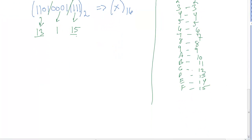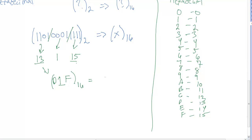Looking at the chart, 13 is D and 15 is F, so we can now write our result as D, 1, F. Therefore D1F in base 16 is equal to our original 110100011111 in base 2.